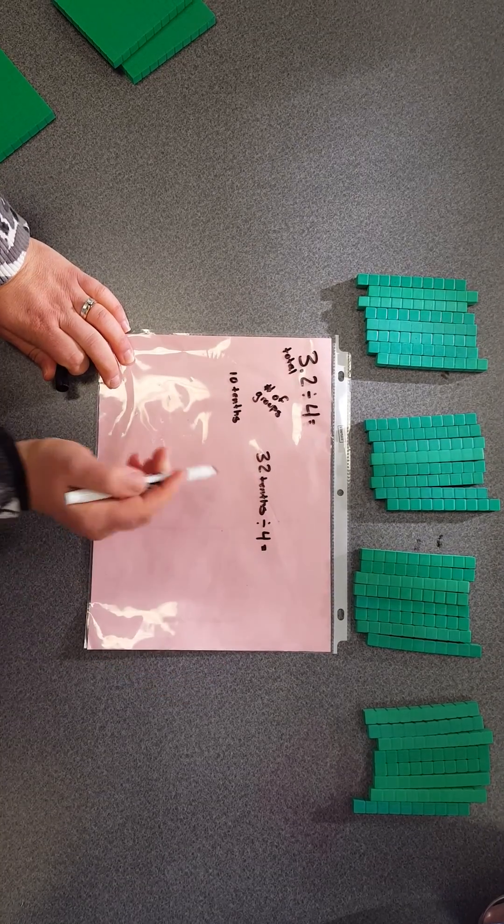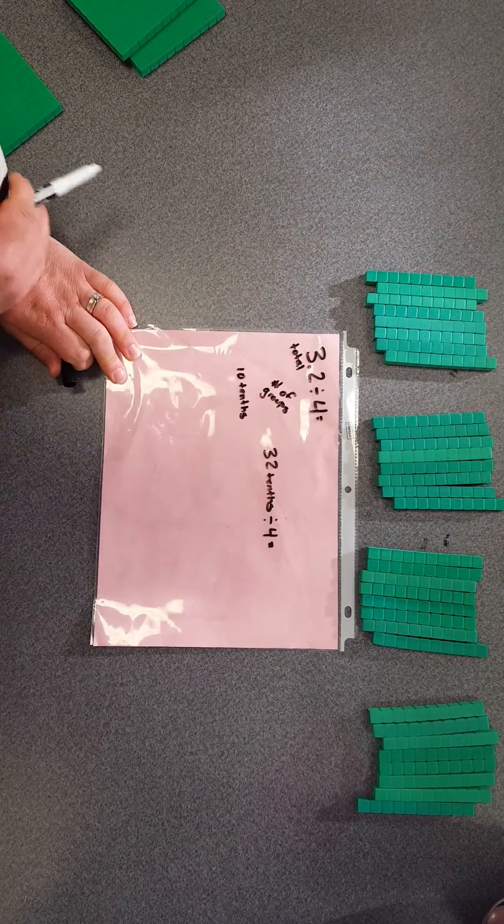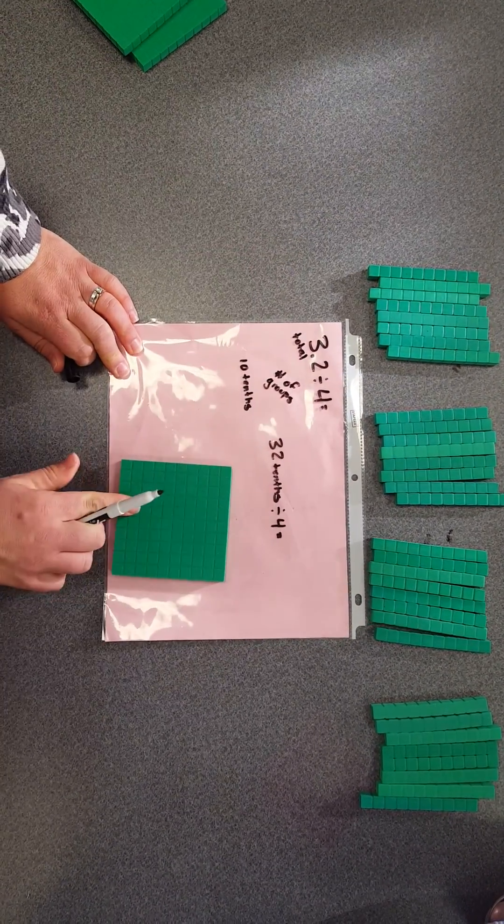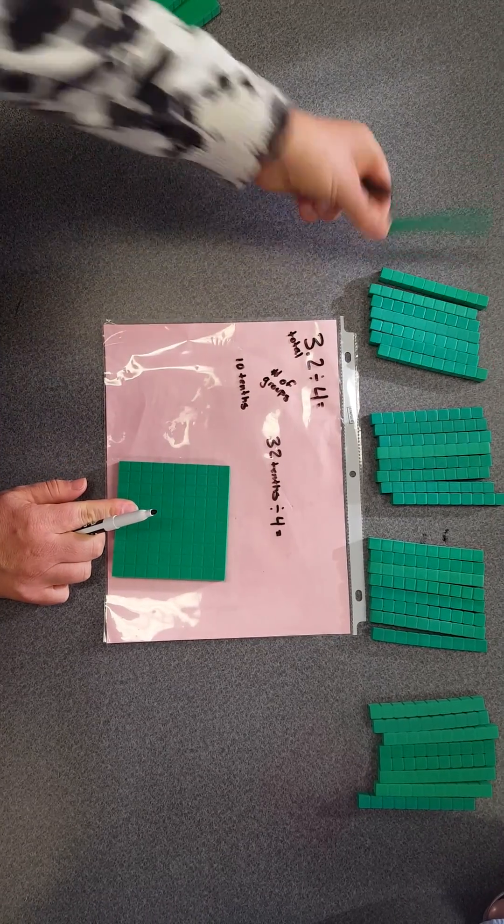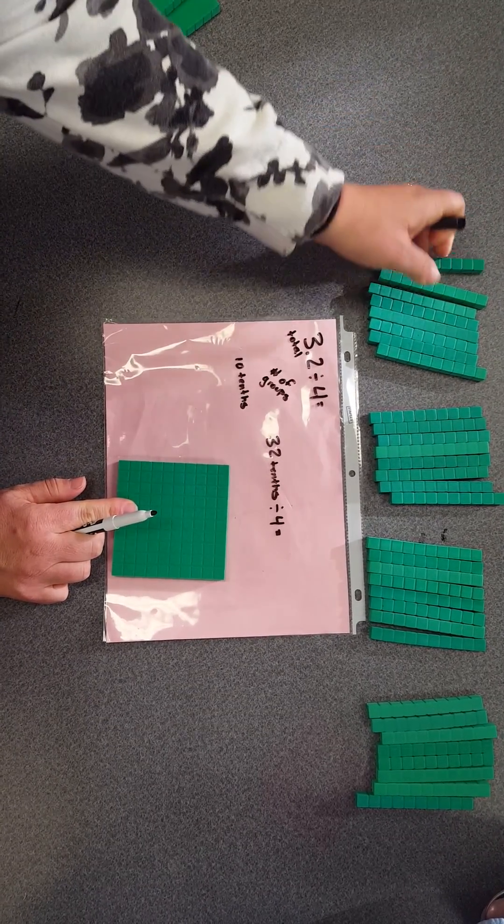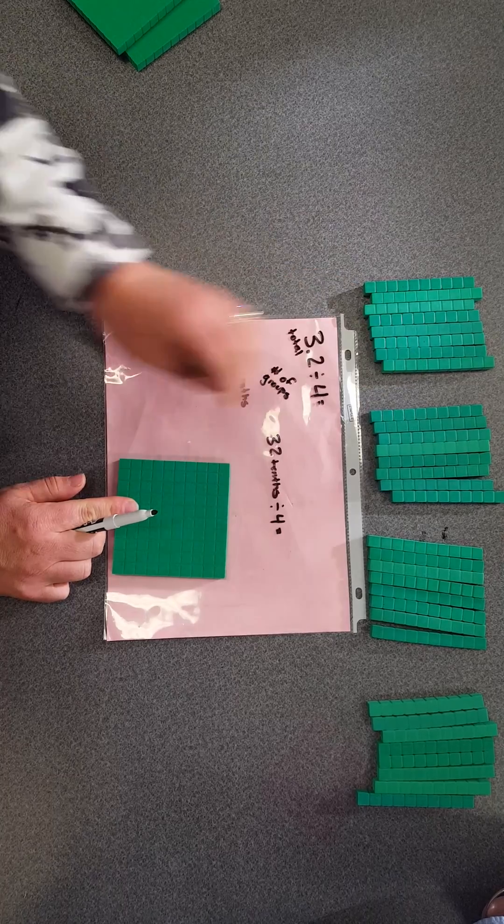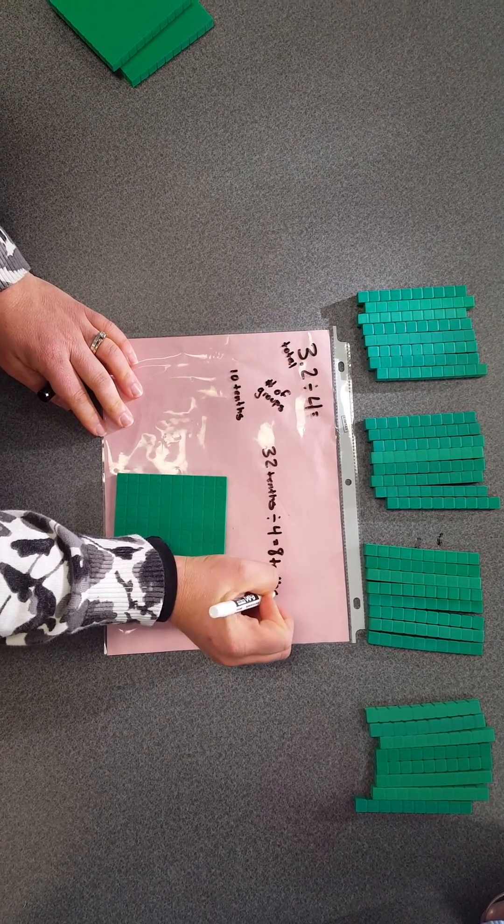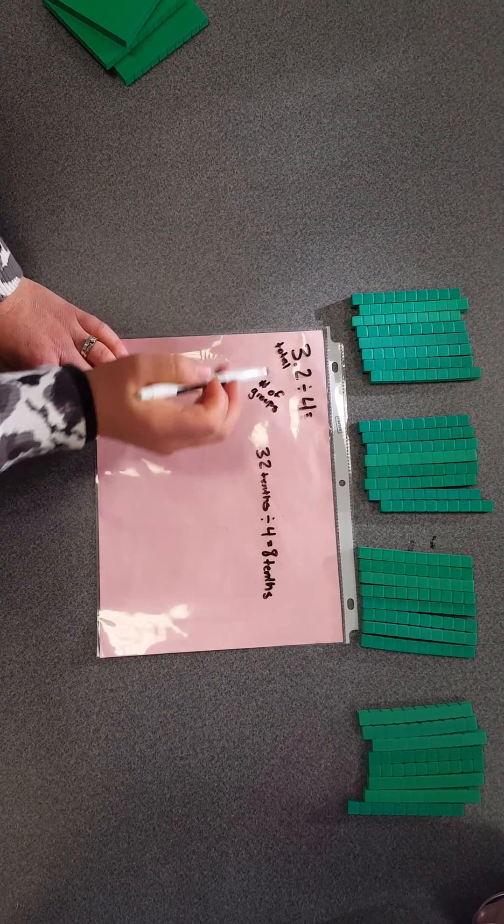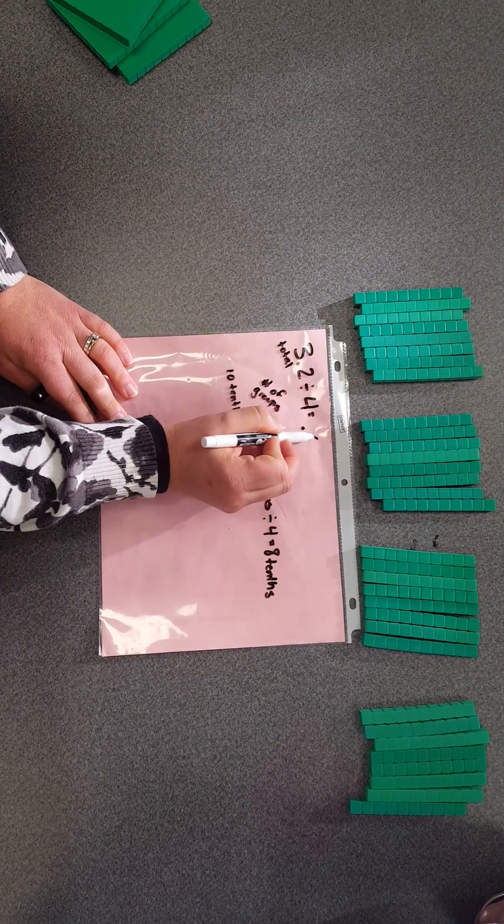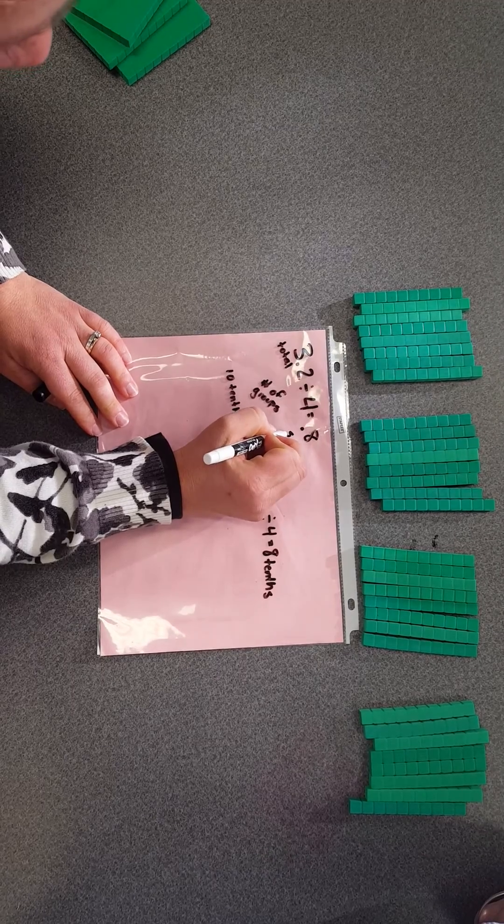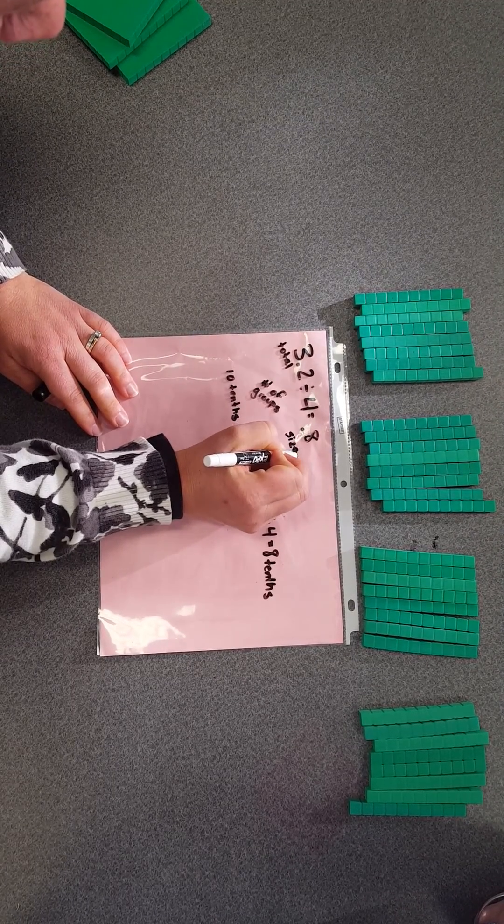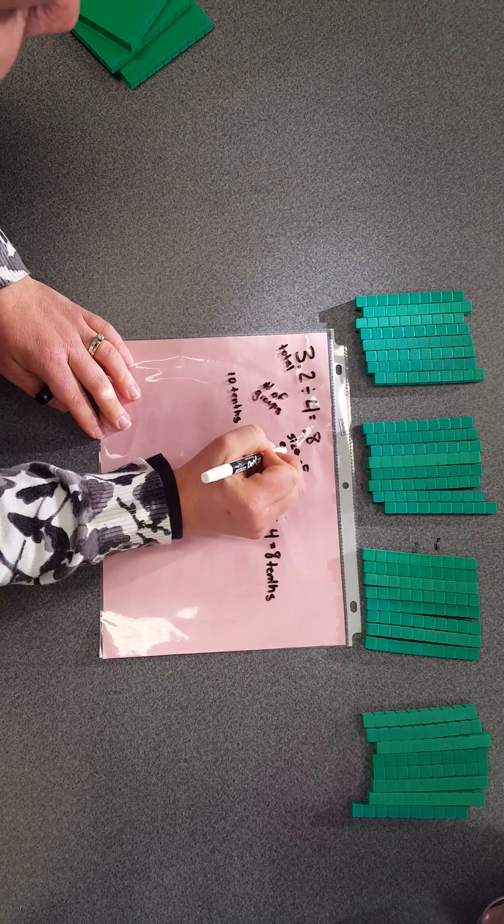So I was able to make 4 nice groups out of my 32 tenths. My answer here is going to be how many are in each group. Remembering that this was my whole, so this is equal to 1 tenth. In this group there are 8 tenths, so my answer is 0.8, and that is the size of each group.